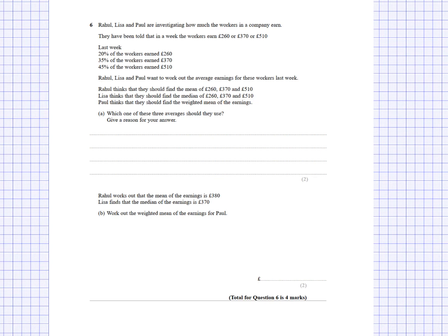Paul thinks they should find the weighted mean of the earnings. The weighted mean is best because it takes into account the proportion of people earning these different amounts. The median is not ideal here since there are only three different values, and the median could be very close to the lowest or highest value. Rahul's simple mean also ignores the proportions. So it's the weighted mean because it takes these proportions into account.